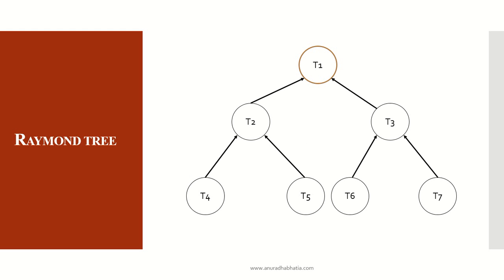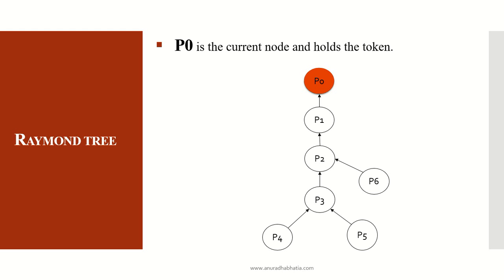This is how the Raymond Tree looks. You can see the root node highlighted and all other nodes pointing towards the root node which holds the token. P0 is the current node that holds the token and all other nodes are pointing towards it.